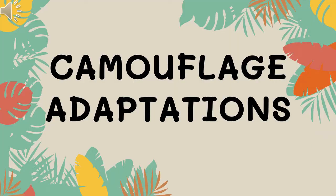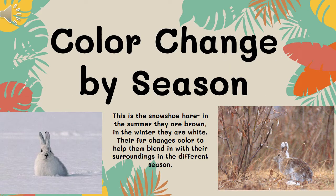Now we get to our last category of structural adaptations: camouflage. When we think of camouflage we often only think of blending in, but there are different types. Some animals have camouflage coloring that changes by season. The snowshoe hare or arctic hare is a good example — in summertime when snow has mostly melted, they're a brownish color, and in winter their fur changes color to white to blend in with the snow.